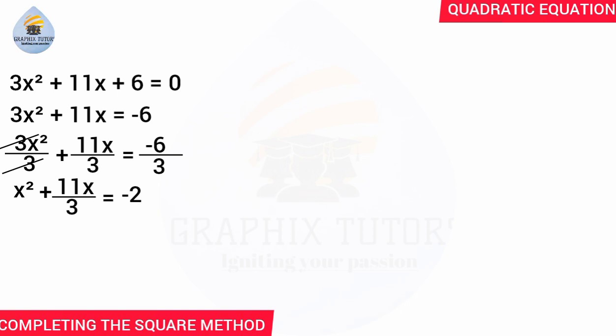The next step is to find half of the coefficient of x — that means multiply the coefficient of x by one over 2. So we have 11 over 3 times 1 over 2, which gives us 11 over 6.